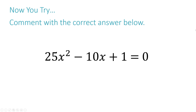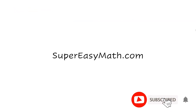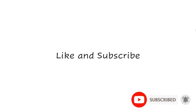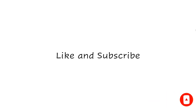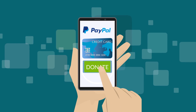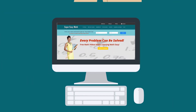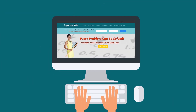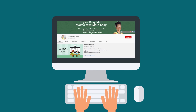Now you try — comment with the correct answer below. Then head over to my website and click on video answers to see if your answer is correct. Solve this equation using the quadratic formula: 25x squared minus 10x plus 1 equals 0. Don't forget to like and subscribe. Did you find this video helpful? You can support this channel by donating to SuperEasyMath through PayPal — there's a link in the description below and on the SuperEasyMath YouTube cover photo.